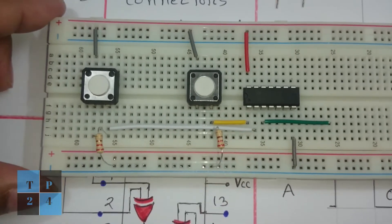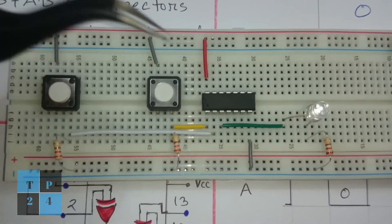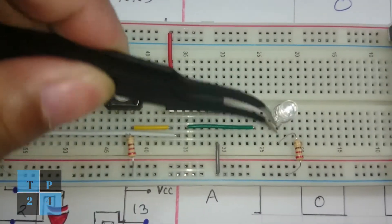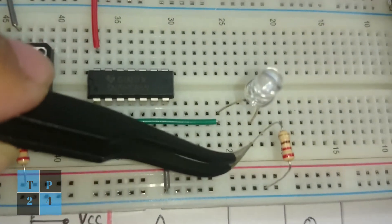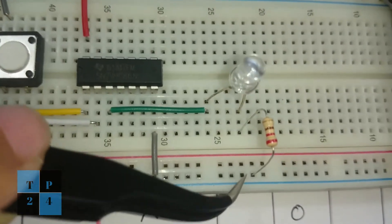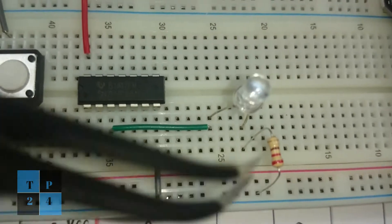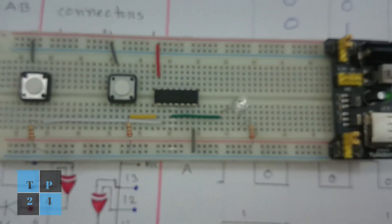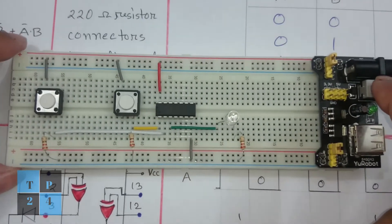And same goes for here also. Here I put the anode and through the cathode of the LED I took a resistance here and put the ground here so my circuit is ready. Now I am going to turn on the power supply of the breadboard.